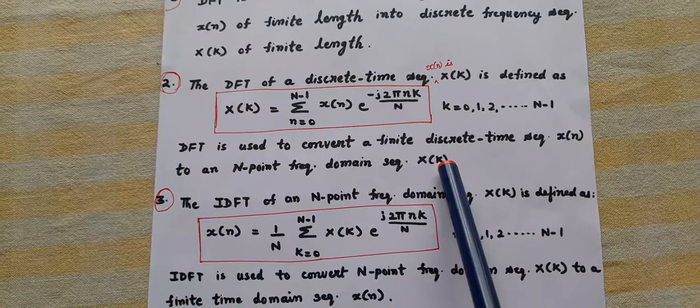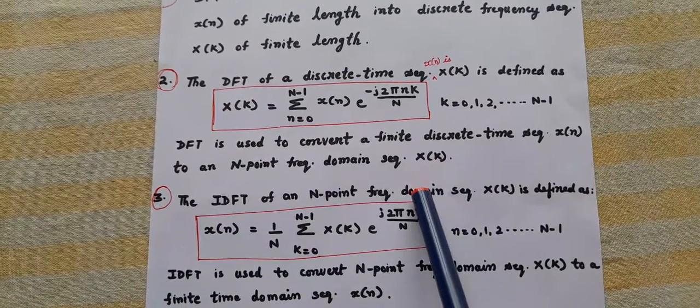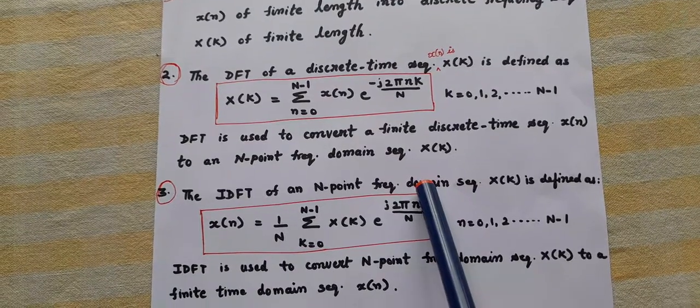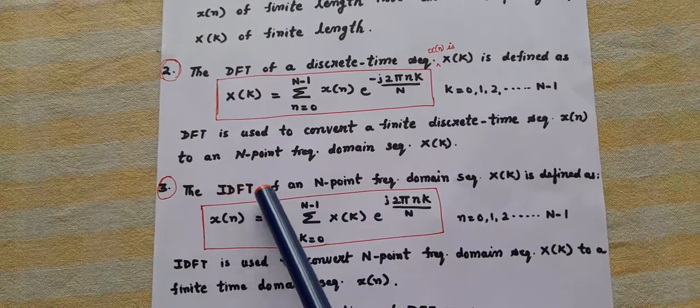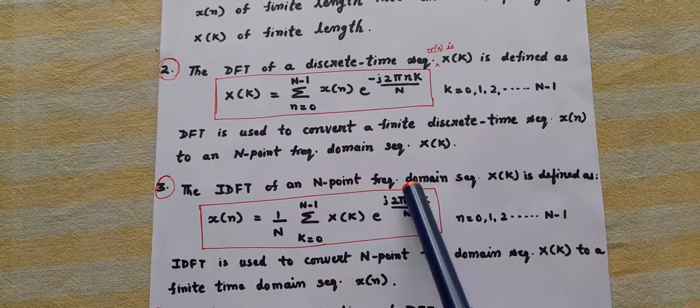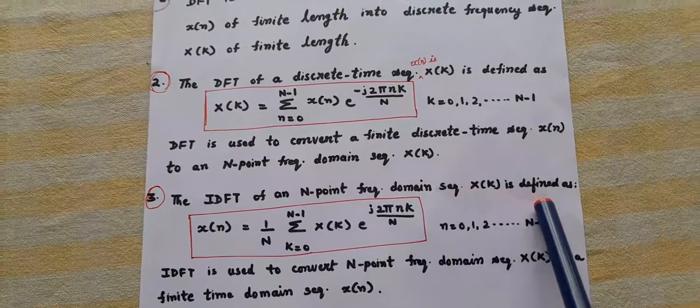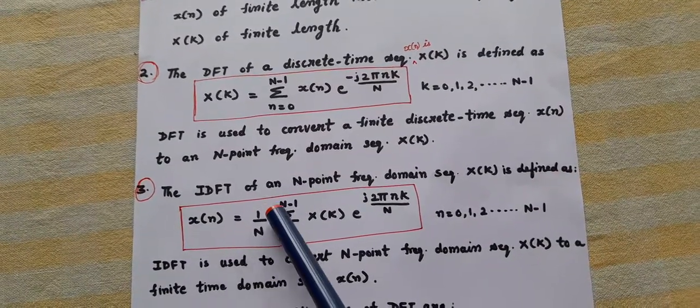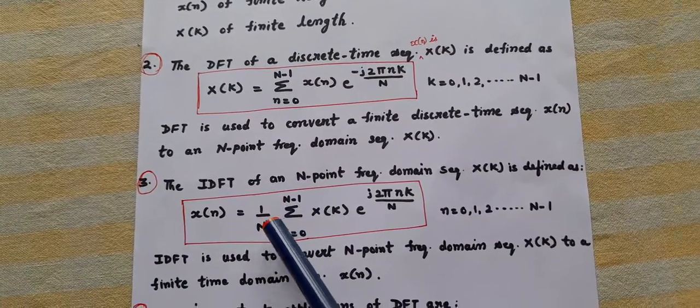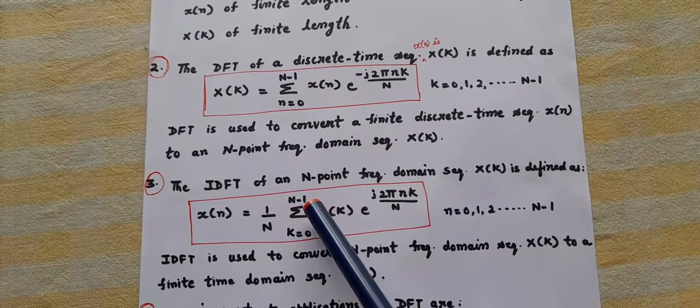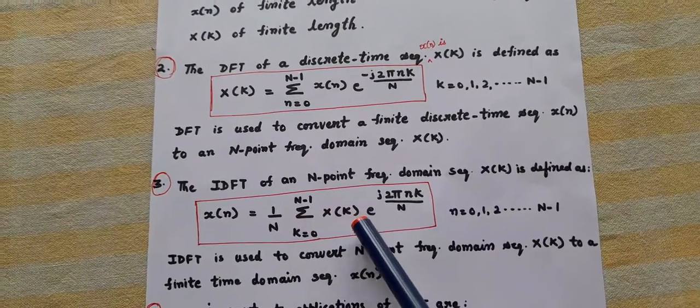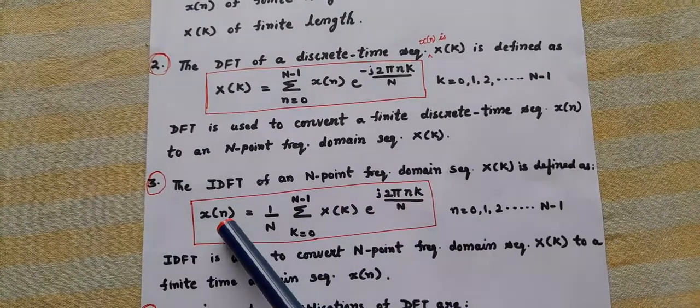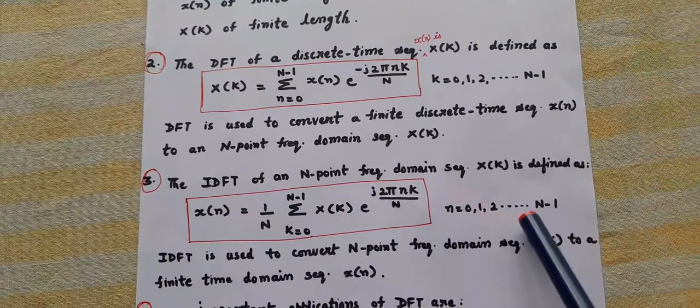To reconstruct the x(n) from x(k), we use another mathematical tool known as IDFT, inverse discrete Fourier transform. The IDFT of an N-point frequency domain sequence x(k) is defined as x(n) equals 1 by capital N, summation k equals 0 to N minus 1, x(k) e to the power j 2 pi n k by capital N, where small n is varying from 0 to N minus 1.